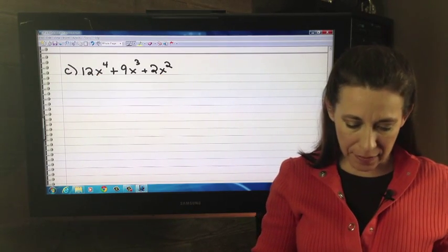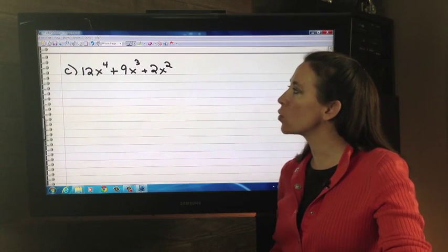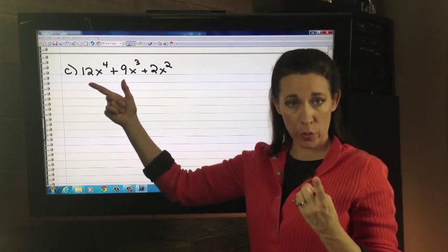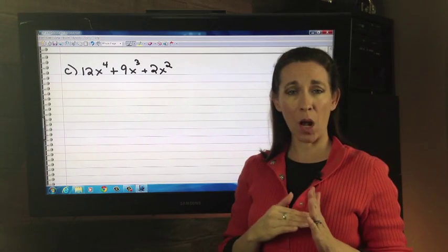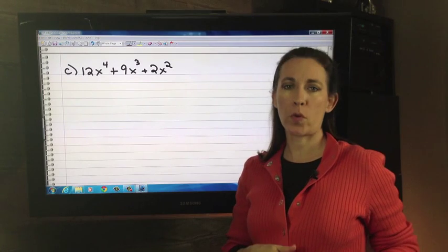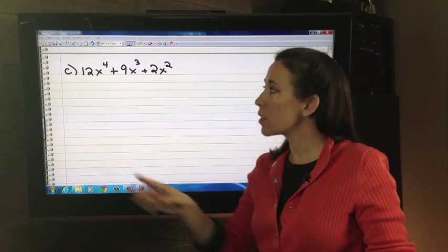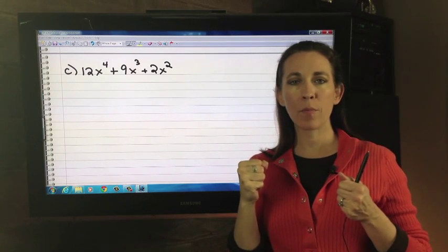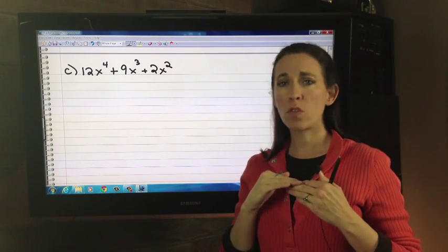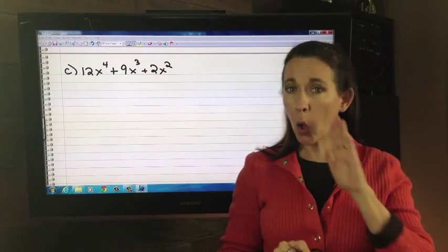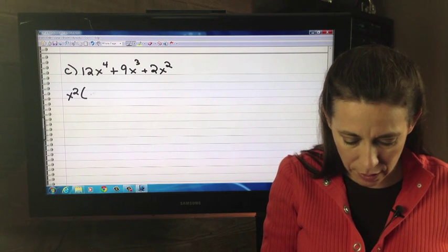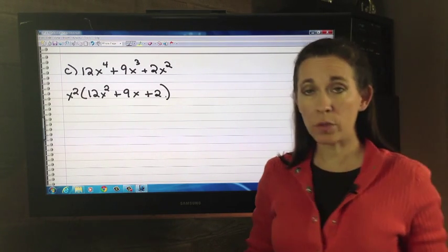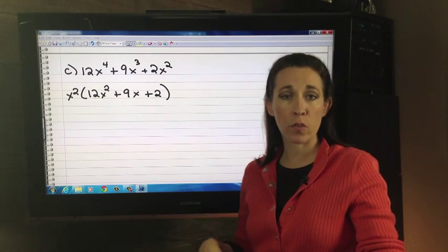But for right now, let's take a look at C. Where we have 12 X to the fourth plus 9 X cubed plus 2 X squared. The bummer here with the coefficients is that the 12 and 9 have a 3 in common. The 12 and the 2 have a 2 in common. But there's not a common factor among all 3. Therefore, we can't take out a number. But we can take out the variables. There's 4 X's here, 3 X's here, 2 X's here. We want to take out as many as we can, but it has to be the same amount from each. So the most that we can take out is going to be the X squared. So we can take out the X squared and be left with 12 X squared plus 9 X plus 2. Which this one cannot be factored further, so you would be finished here.